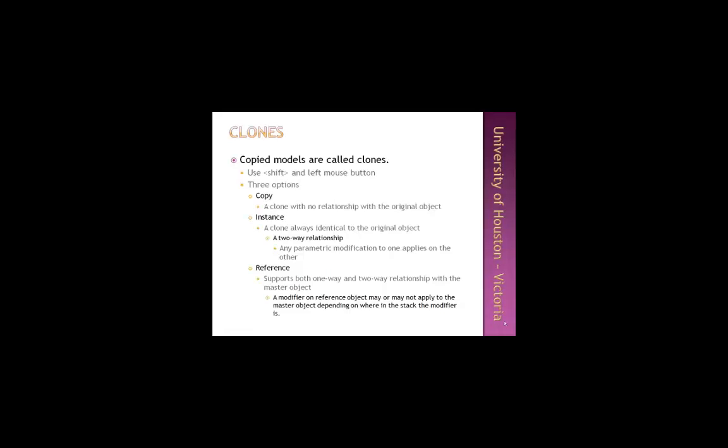To start with the first topic, we will talk about objects that you may want to create and then make copies of in a scene - such as a row of columns in front of a building, or the legs of a chair. These objects are called clones - they are copies of models that you create. To make a copy, you left-click and select the object with the select-and-move Gizmo, then while holding the Shift button you drag the object. This opens the cloning dialog, which has three options: copy, instance, and reference.